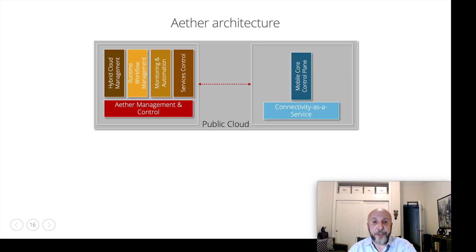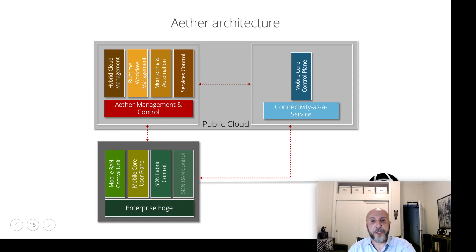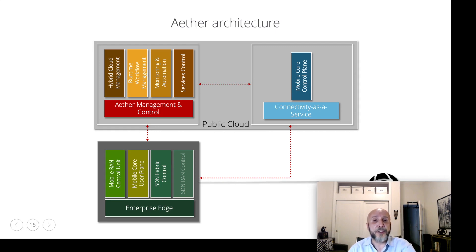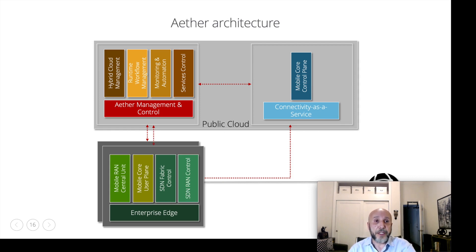Running on a distinct Kubernetes cluster is the mobile core control plane, overseeing multiple user planes each running on a different Ether edge. Each edge is effectively a Kubernetes cluster running on an SDN infrastructure. It hosts connectivity workloads—virtualized components of the RAN and mobile core user plane—as well as infrastructure control workloads including the SDN controller for the fabric and the SDN controller for the RAN for ORAN architecture support. It also hosts all edge applications the enterprise wishes to consume, whether for low latency reasons, traffic localization goals, or to minimize backhaul traffic costs. Both the management and control platform and the mobile core control plane oversee multiple edge locations.